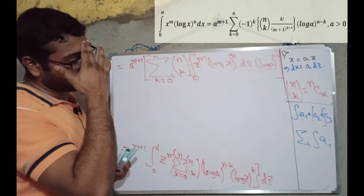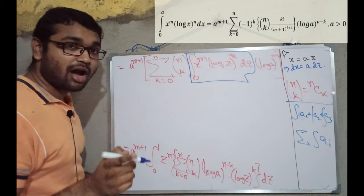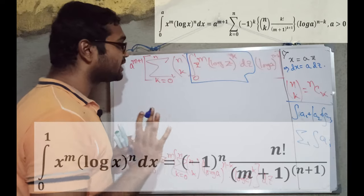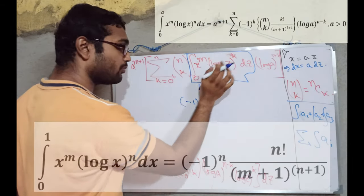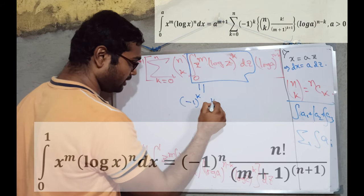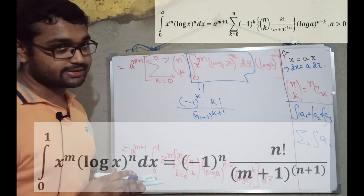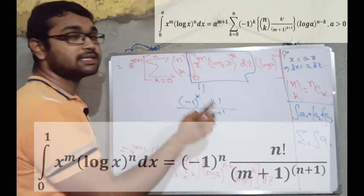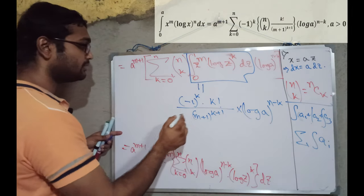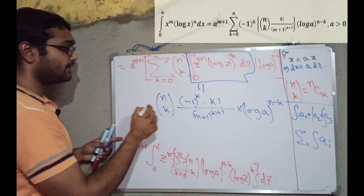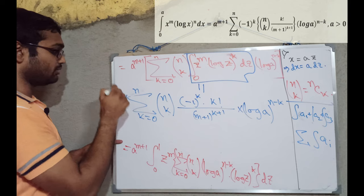In the next step, what we are going to get? First, think about this portion. This portion, we have encountered in the previous problem. And what we shall get as the solution of this thing is, as we have done in the previous problem, minus 1 whole to the power k times k factorial, divided by m plus 1 whole to the power k plus 1. Those who haven't seen the previous video, just go there. It is the solution of this integral. And then, there is log of a to the power n minus k. And then, this n c k here, the summation, k equal to 0 to n, and a to the power m plus 1.